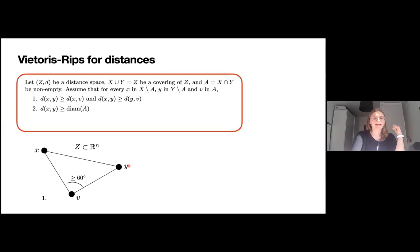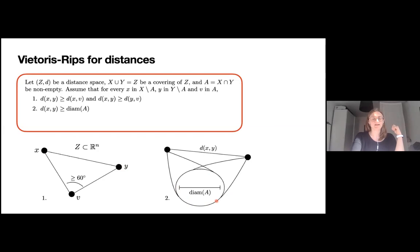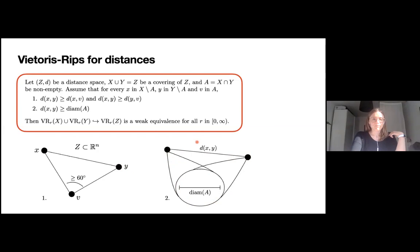The second condition requires that the diameter of the intersection A is small enough, specifically smaller than or equal to the distance between x and y as chosen above. If conditions one and two both hold, then the inclusion of the Vietoris-Rips complexes of the decomposed space into the Vietoris-Rips complex of the total distance space is a weak equivalence, and this is independent of the choice of scale parameter r — it holds for every r.